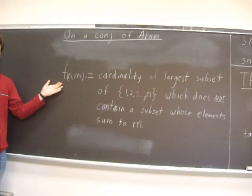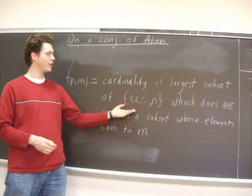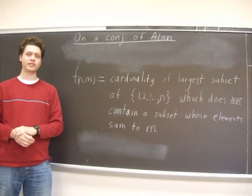First, let's define the function f(n,m) to be the cardinality of the largest subset of integers 1 through n which does not contain a subset whose elements sum to m.